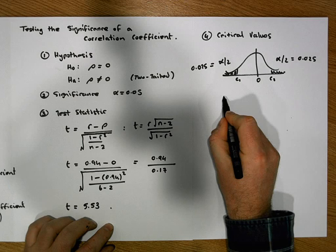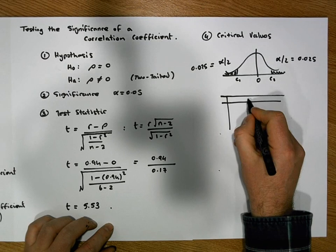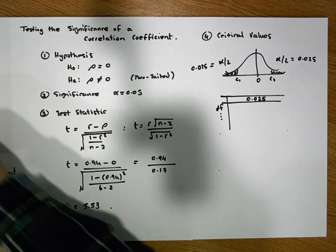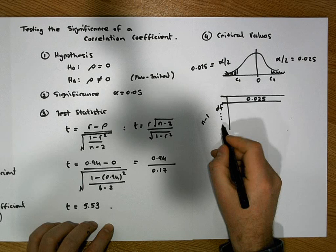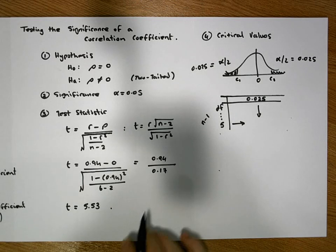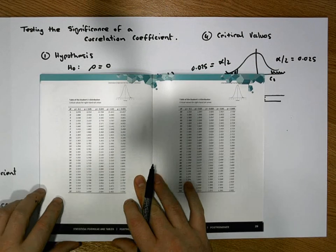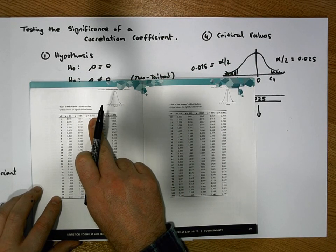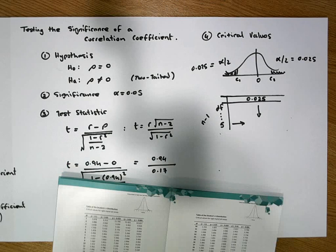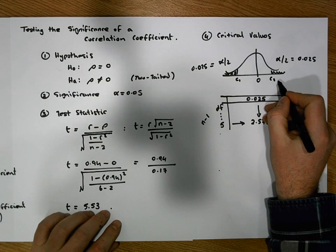To find the critical values, we go to the t distribution tables. The area in the right-hand tail is 0.025 and the degrees of freedom are n minus 1, which is 6 minus 1, giving us 5. Triangulating in the t distribution table with an area of 0.025 in the right-hand tail and 5 degrees of freedom, the critical value is 2.571.